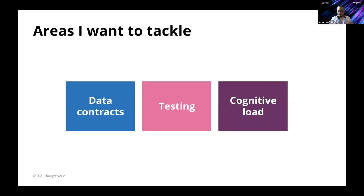Now that context has been laid out, I want to tackle three areas. First, data contracts, which cover our input data. Then testing — the middle part — how we actually test that our aggregations are correct. And then I want to touch on the cognitive load of these types of data engineering projects, which is kind of an umbrella above everything else.